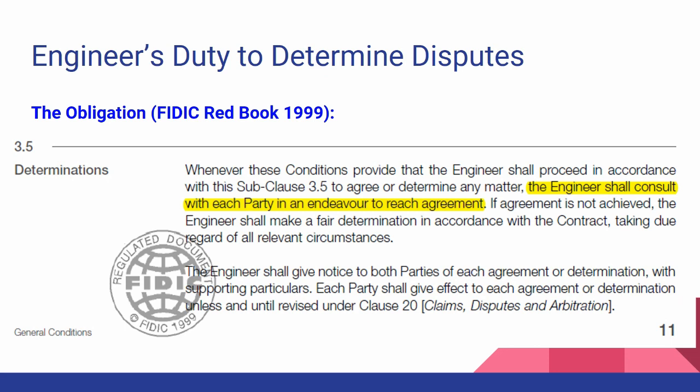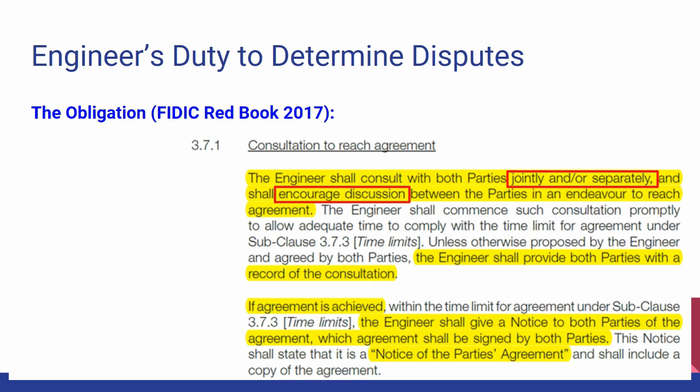If that effort is successful, the second paragraph shows the engineer must record the agreement and notify the parties accordingly. If it is not successful, then and only then can the engineer render a determination. In 2017, the phrase 'shall consult with each party in an endeavor to reach an agreement' has been significantly expanded. Clause 3.5 became an elaborate clause 3.7, divided into several parts, the first being this consultation to reach agreement, followed by the determination process itself.